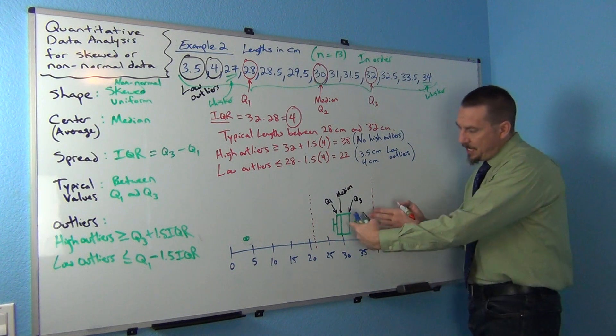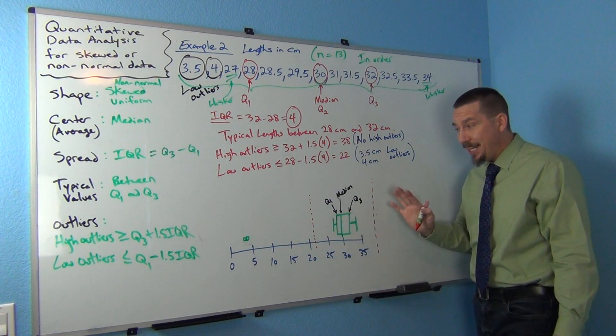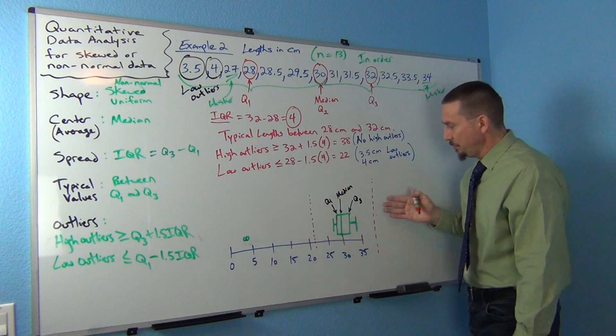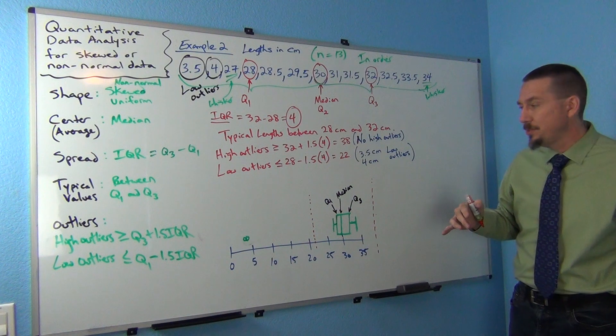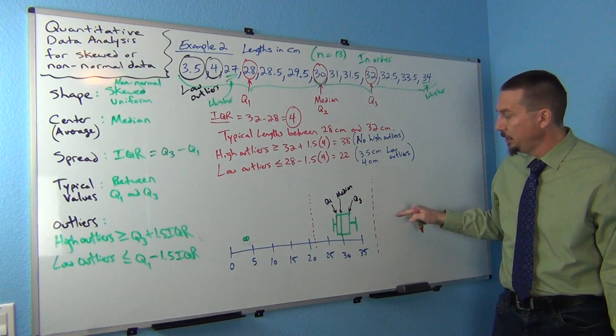So anything inside, any numbers inside these two invisible lines are considered not outliers. Anything outside the invisible lines, anything on the far left or far right would be considered outliers. In our case, the data only had two outliers, two low outliers, and no high outliers.